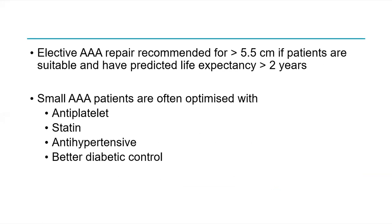Abdominal aortic aneurysm is recommended for repair when it reaches 5.5 cm, if the patient is suitably fit and has a predicted life expectancy of more than two years. If it hasn't reached that size, patients should be optimised with antiplatelet therapy and statins, and other risk factors such as hypertension and diabetes should also be optimised.